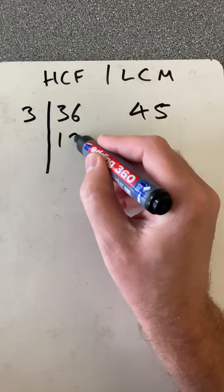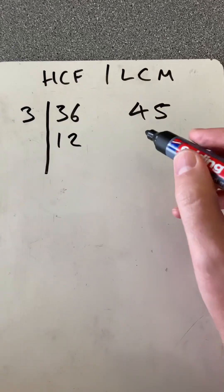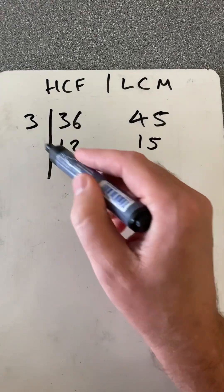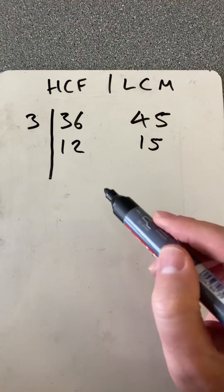36 divided by 3 is 12. 45 divided by 3 is 15. And if you're doing a factor tree of each of these on their own, you would be breaking it down like this.